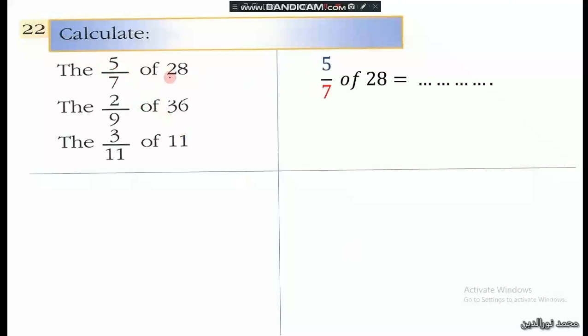So here we have 5/7 of 28. First of all, we divide by 7 and the answer is multiplied by 5. 28 divided by 7 is 4, then 4 times 5 is 20.